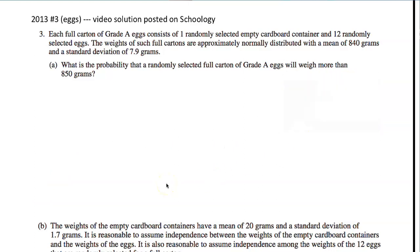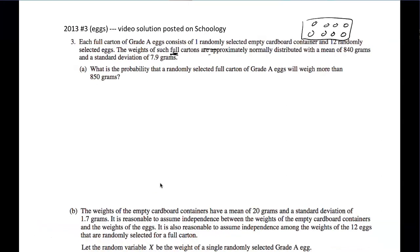Each full carton of grade A eggs consists of one randomly selected empty carton container and 12 randomly selected eggs. So we have a container and we have 12 eggs. The weights of the full carton are approximately normal. That's important. With a mean of 840 grams and a standard deviation of 7.9 grams. What is the probability that a randomly selected full carton will weigh more than 850 grams?